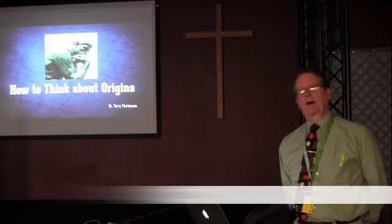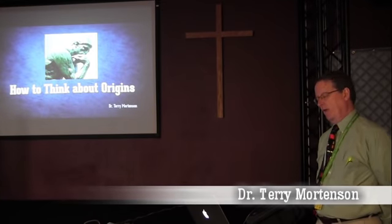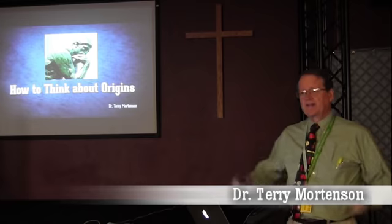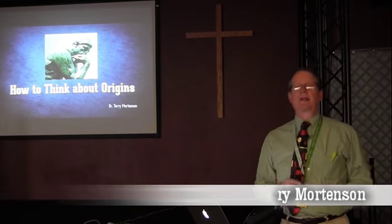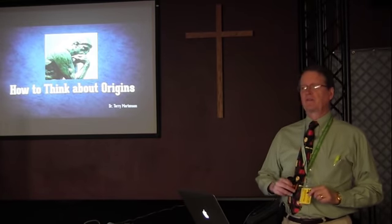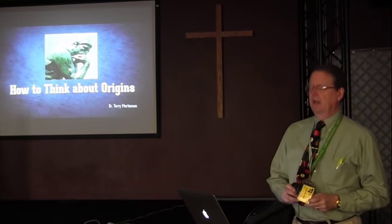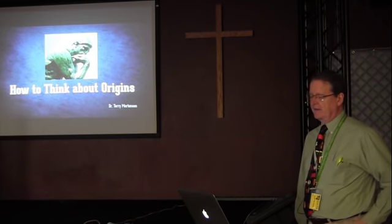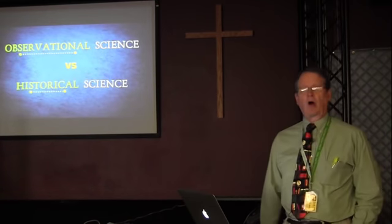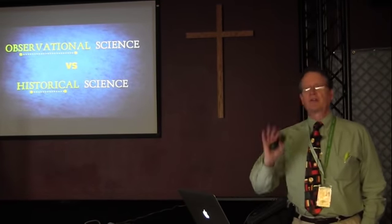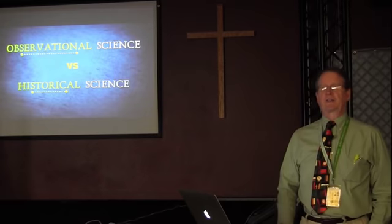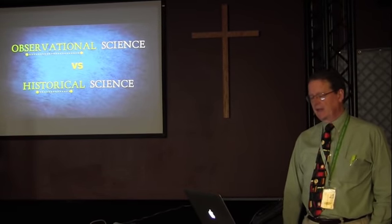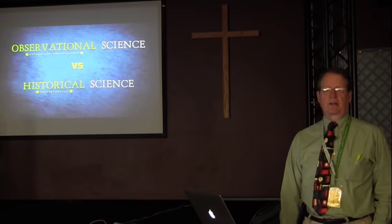This morning I want to talk to you about how to think about origins. To begin with, if we're going to think correctly about origins, there's massive confusion in our world today. We need to understand that there are two broad categories of science, two kinds of science. We can call them observational science and historical science.